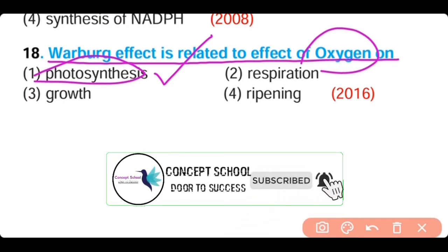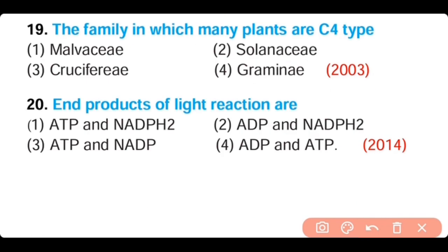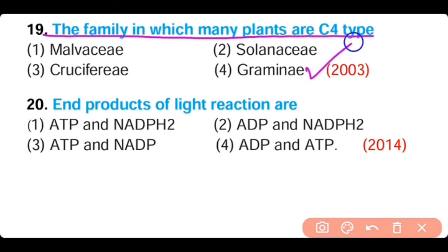Question number 19. The family in which many plants are C4 type is: Malvaceae, Solanaceae, Cruciferae, or Gramineae. The correct answer is option 4. Gramineae is the family of plants in which the majority of plants are C4 type.